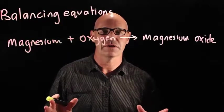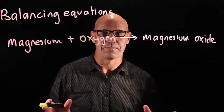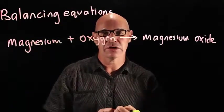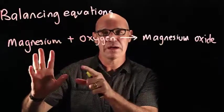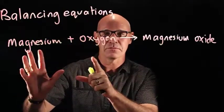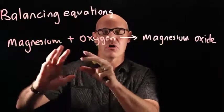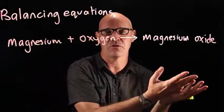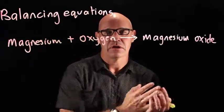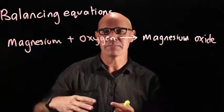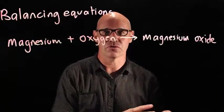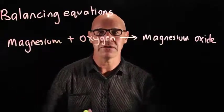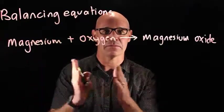The law of conservation of mass says that when we have a chemical reaction we need to have the same number of atoms on the reactant side of the equation as we have on the product side. Because mass can't be created or destroyed. So when we're balancing equations we need to make sure we've got the same number of atoms.